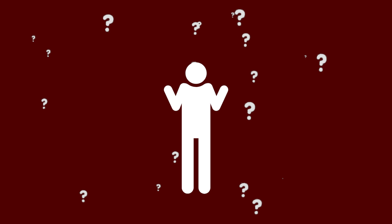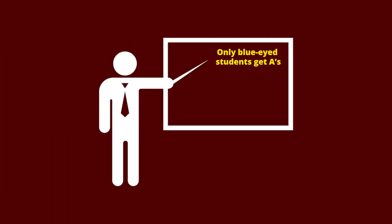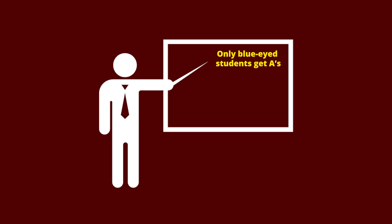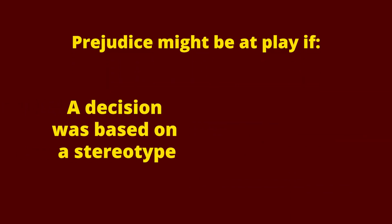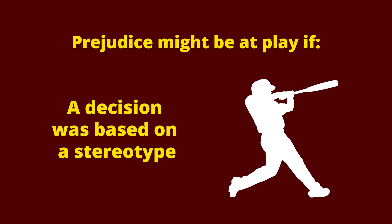Arbitrary is a decision made for no clear reason — for example, in contradiction to a policy on the syllabus. Capricious means a decision was made according to the instructor's whim — for example, if the instructor gives all blue-eyed students A's. Prejudice might be in play if you can show a decision was based on a stereotype that is not a protected class — for example, because you're a baseball player and the instructor has stated that athletes can't make A's.